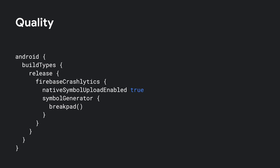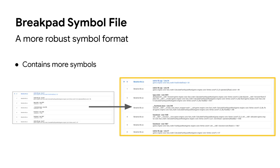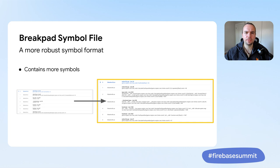Breakpad and Crashpad share some of their tooling, including symbol file and crash report formats. The Breakpad symbol file contains more debug information that results in higher fidelity within the application frames of the stack traces, giving you more clues to where the problem may be. Compared to our previous format, the Breakpad symbol file contains more symbols — those corresponding to inlined and hidden visibility functions — and the resulting stack traces paint a clearer picture of the path the error took through your app.